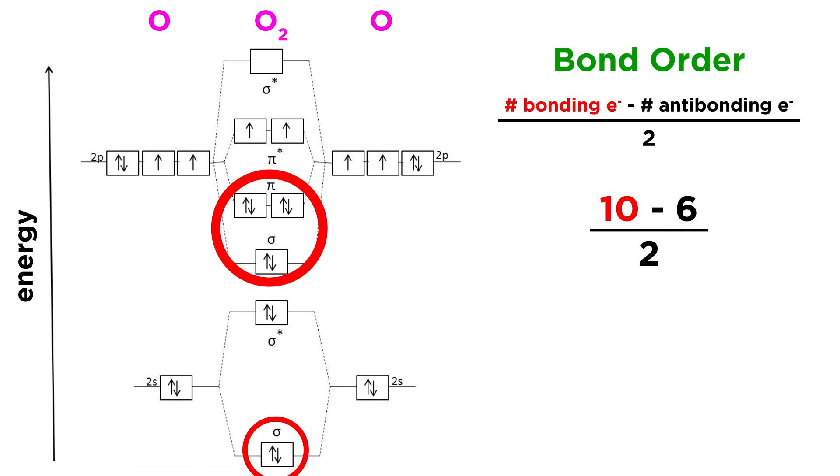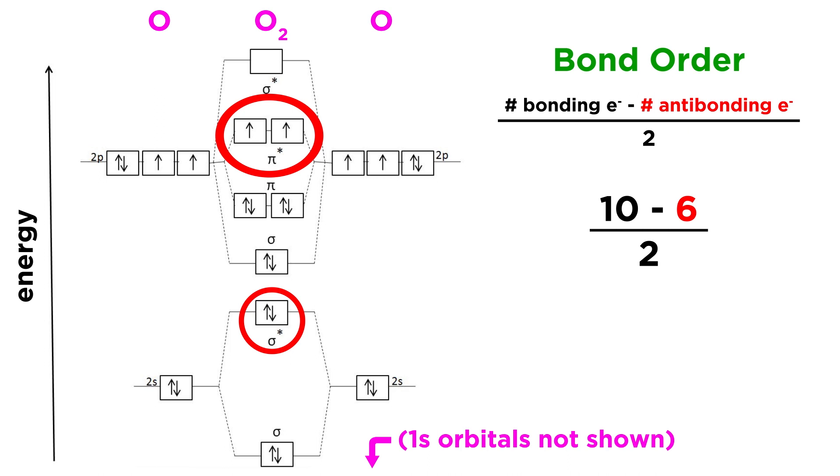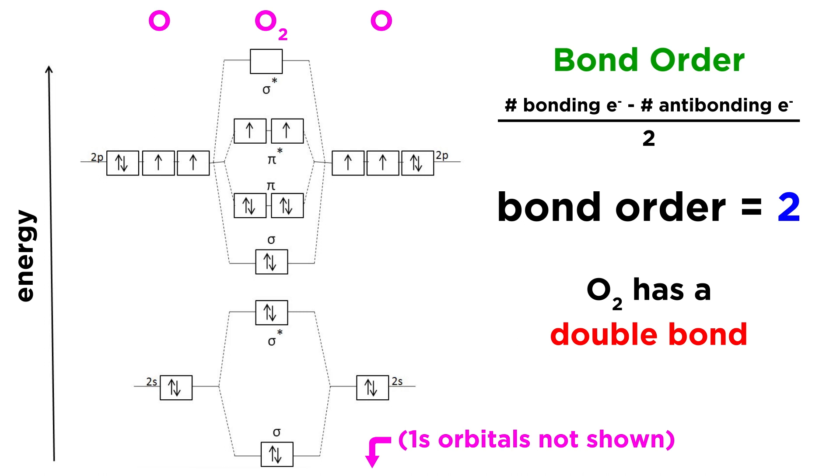With ten bonding electrons, including the sigma-1s bonding electrons, and six antibonding electrons, including the sigma-1s star antibonding electrons, ten minus six is four, and four over two is two. This explains the double bond in diatomic oxygen.